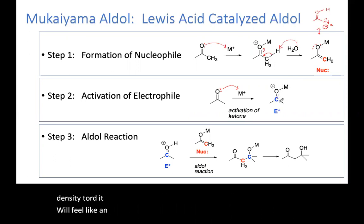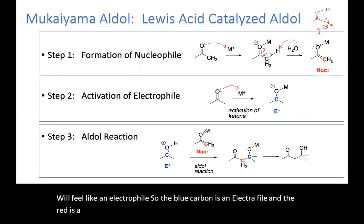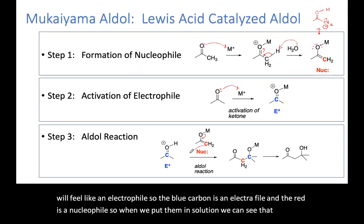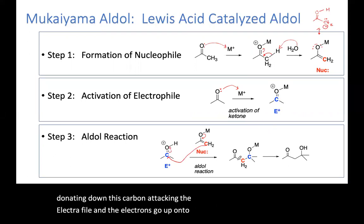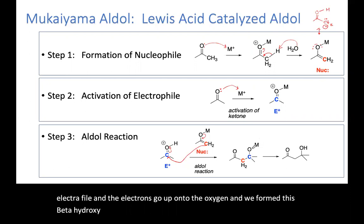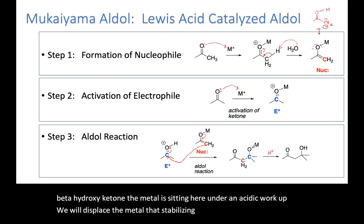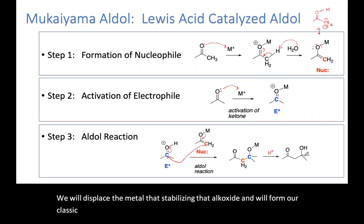So the blue carbon is an electrophile and the red is a nucleophile. When we put them in solution, we can see the electrons donating down, this carbon attacking the electrophile, and the electrons go up onto the oxygen — we've formed this beta-hydroxy ketone. The metal is sitting here, and under an acidic workup we will displace the metal stabilizing that alkoxide and form our classic aldol beta-hydroxy ketone.